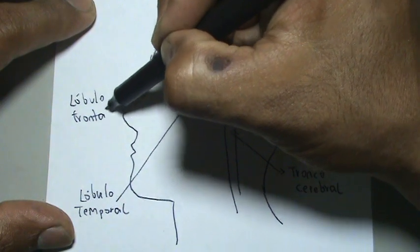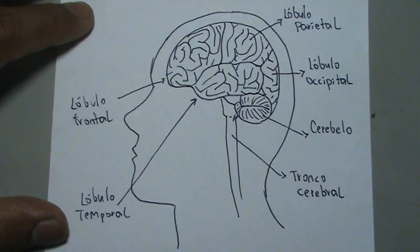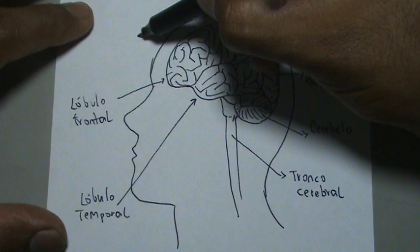Esa división que yo hice al principio es la que estamos nombrando ahorita. Esa la podríamos demarcar después con colores para identificarlos más fácil.